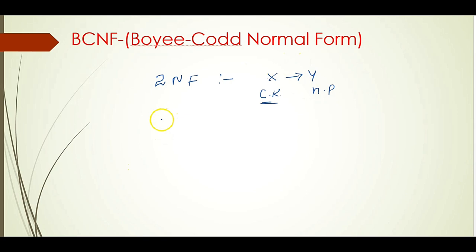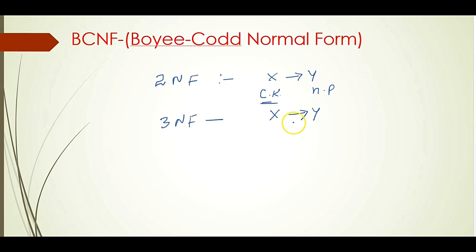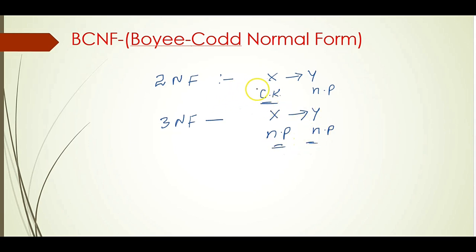Now let us come to the third normal form. The third normal form says: for a functional dependency X derives Y, no non-prime attribute is dependent on another non-prime attribute. So here, Y is a non-prime attribute dependent on X, which is also a non-prime attribute. This is the transitive dependency situation discussed in the third normal form.